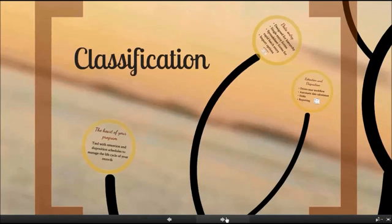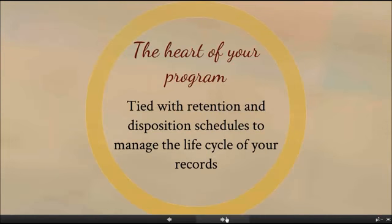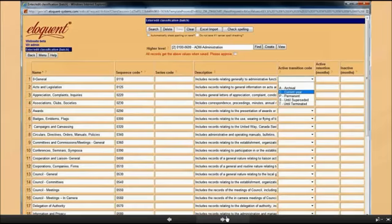A business classification scheme and records retention is central to the system. It controls all of your workflow activities, from filing through to final disposition. In Eloquent Records, your classification scheme is tied directly to your retention and disposition schedules in order to help you manage the lifecycle of your records most efficiently. The entry forms are designed with a hierarchical classification in mind. We have single-entry forms for comprehensive data entry that include fields for synonyms, alternate terms, relationship links, and legal citations, as well as spreadsheet forms designed for more rapid skeleton data entry. We can also import your scheme from an already existing source.